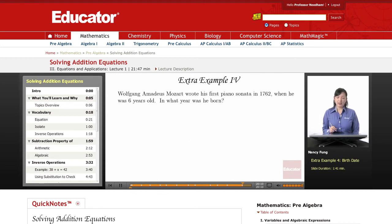Here is another example using addition equations. Wolfgang Amadeus Mozart wrote his first piano sonata in 1762 when he was only six years old. And what year was he born?